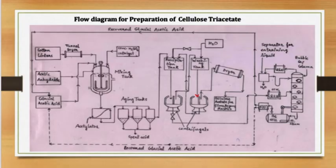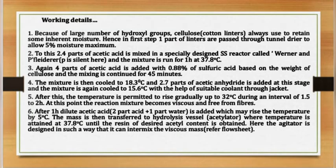Now you can see the flow diagram for preparation of cellulose triacetate. Let's see how it works. Step one: because of the large number of hydroxyl groups, cellulose cotton linters always retain some inherent moisture. Hence in the first step, one part of linters is passed through tunnel driers to allow a maximum of 5% moisture.